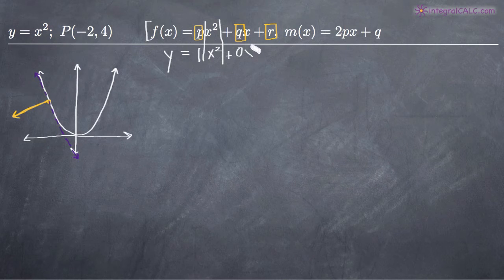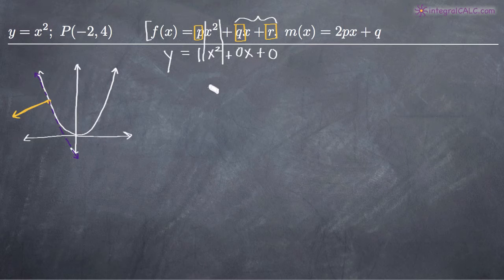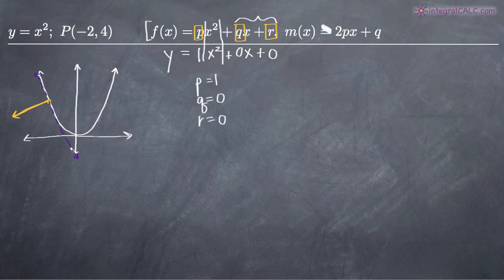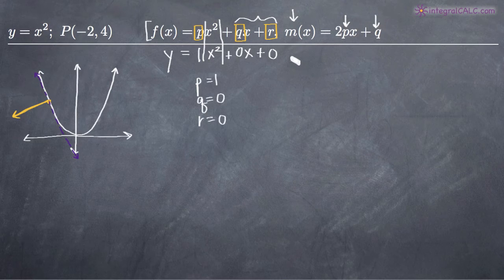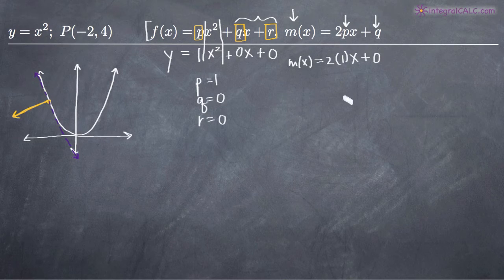It also means that q equals 0 and r equals 0, because the qx and r terms don't exist in our function. So p equals 1, q equals 0, and r equals 0. We now want to plug this into the equation for the slope of the tangent line. m(x) equals 2 times p, which is 1, times x, plus q, which is 0. Simplified, that gives us m(x) equals 2x.